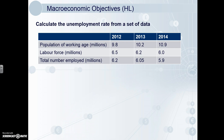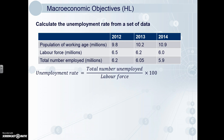First we'll look at calculating the unemployment rate from a set of data. We've already looked at this in class so we'll be brief. Here is the typical set of data you might get in Paper 3. Where people tend to go wrong is thinking that the unemployment rate is the total number of unemployed divided by the population. People who aren't actively seeking work are not counted as unemployed. The correct equation is: total number of unemployed divided by the labour force times 100 to get our percentage. The labour force being the total number of people either employed or actively seeking employment.